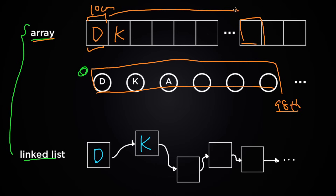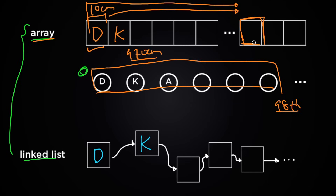So you just need to walk 10 centimeters times 97, which is 970 centimeters from the beginning, and then you can find the 98th person's token pretty easily and replace it with the correct one. With the linked list data structure, doing the same thing would be slightly more tricky.